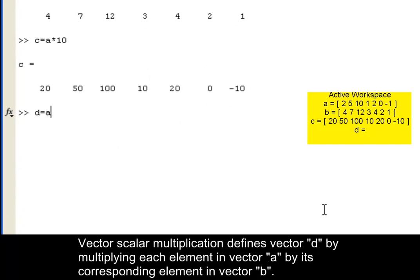Vector scalar multiplication defines vector D by multiplying each element in vector A by its corresponding element in vector B.